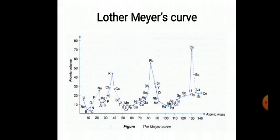Curve number one shows lithium, curve number two shows the highest point of sodium, curve number three shows the highest point of potassium, curve number four shows the position of rubidium, and the last shows cesium. These elements — lithium, sodium, potassium, rubidium, and cesium — all have a large atomic volume and are called the alkali metals.